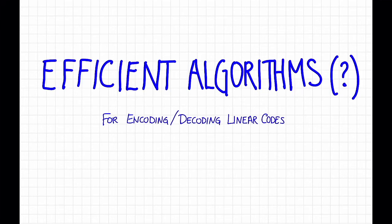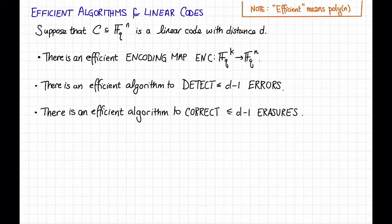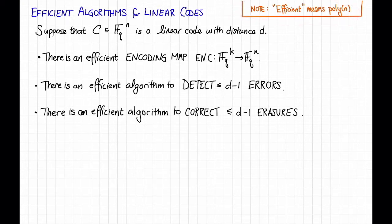In this video, we'll briefly discuss the extent to which arbitrary linear codes admit efficient algorithms. By an efficient algorithm, I mean an algorithm that runs in time polynomial in n, the block length of the code.